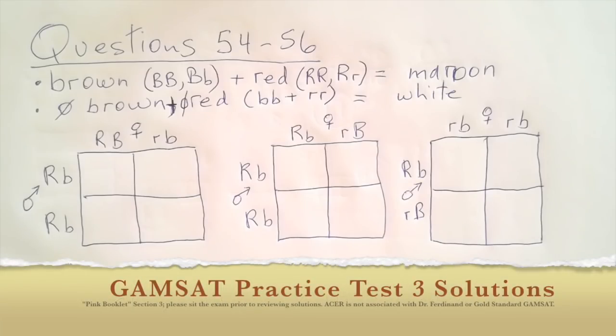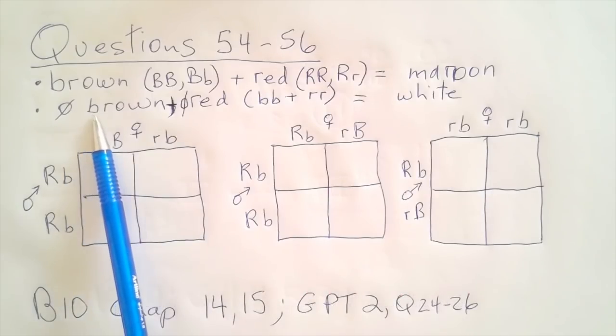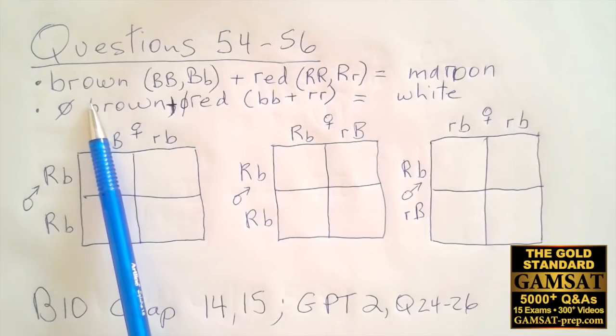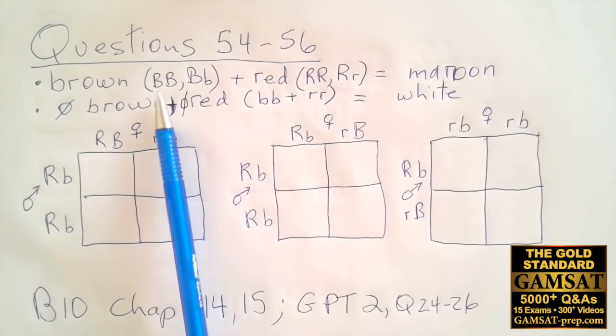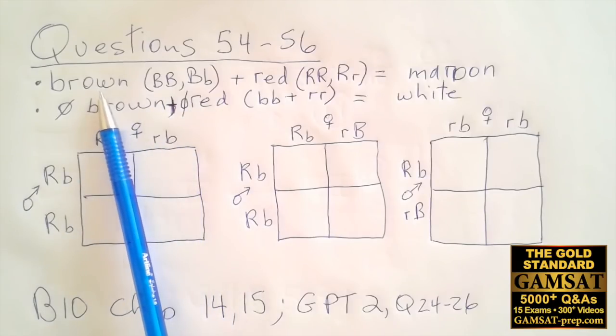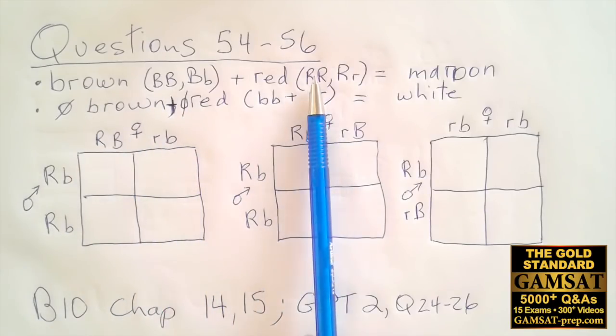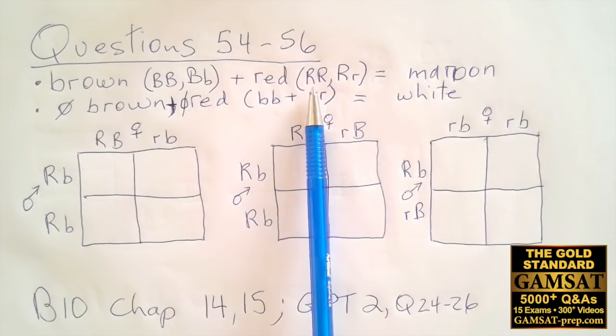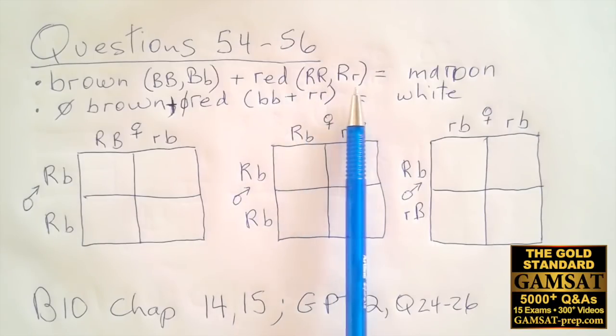Questions 54 to 56. Let's see what we learn from the passage. We learn that brown, the phenotype brown eyes, will be expressed if we have the dominant allele, so BB or Bb. Either case would express brown. And red would be expressed with the dominant allele R, so RR or Rr.